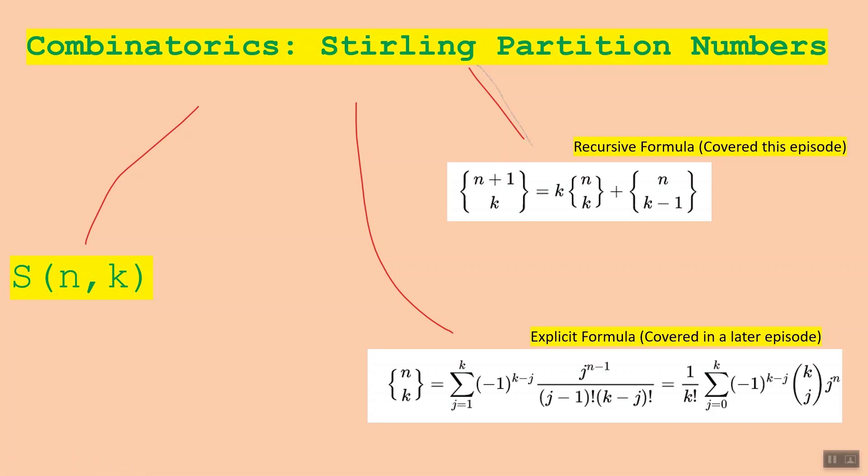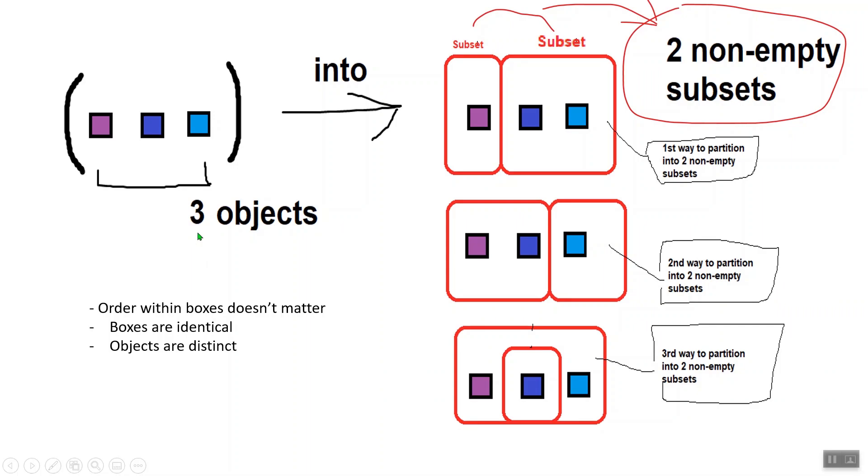Now these numbers are really important to the fields of combinatorics and discrete math. Stirling partition numbers tell us the number of ways we can group the elements of a set of n objects into k non-empty subsets. Grouping elements of a set into non-empty subsets is also called partitioning a set.